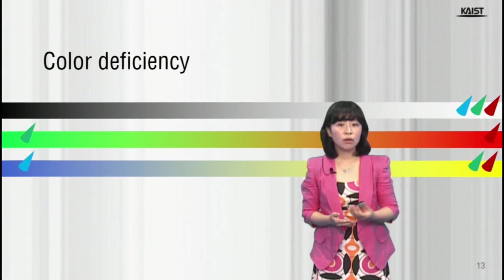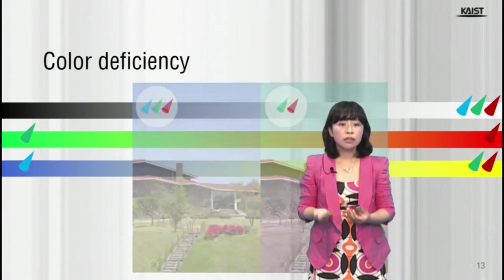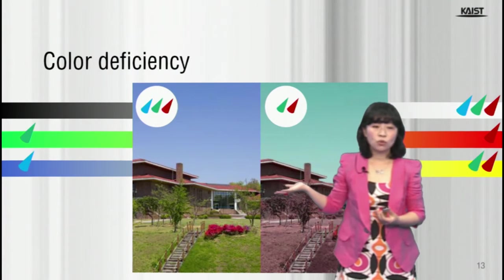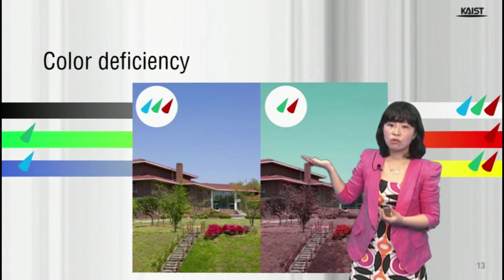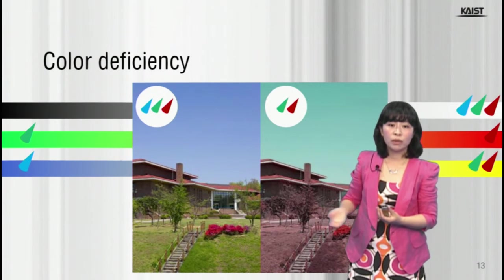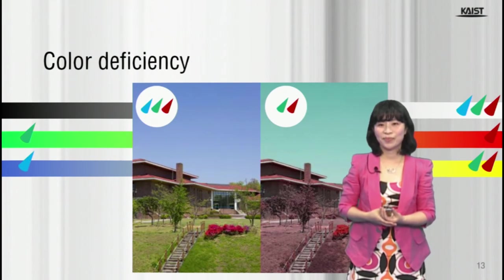Therefore, when the S-cone is absent, the original image may be seen in this way. The image is rendered using only red-green information with some brightness.